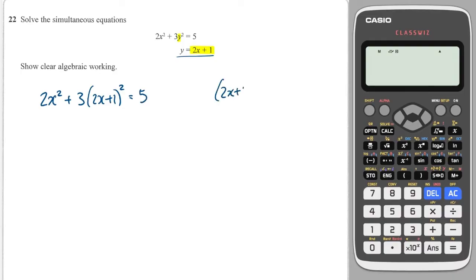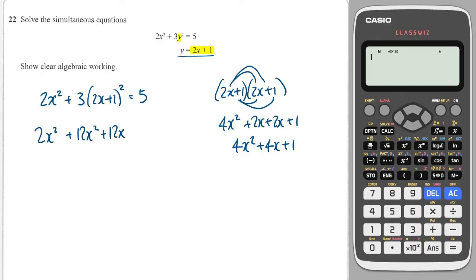We'll then need to do 2x plus 1 squared, so I'll do it on the side over here. We'll get 4x squared plus 2x plus 2x plus 1, so that's 4x squared plus 4x plus 1. We then need to multiply that by 3, so that's going to give us 12x squared plus 12x plus 3, and that's equal to 5. We can then simplify by adding these x squared together, and subtracting 5 from both sides is going to give me minus 2 here, and that's equal to 0.